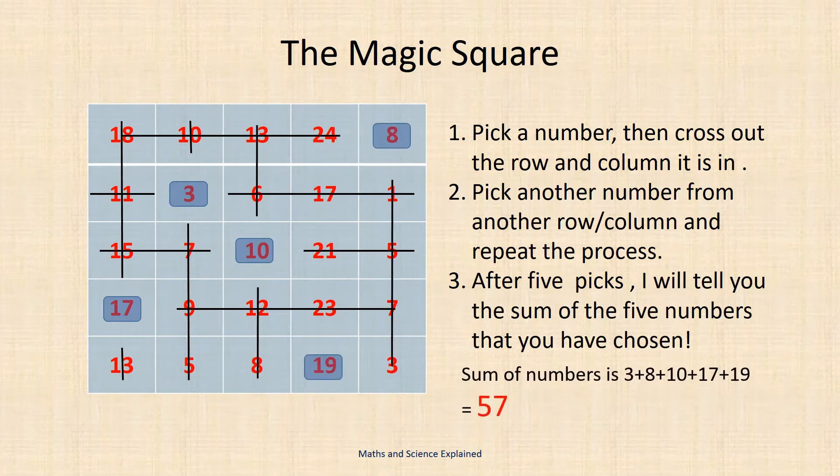Lastly to your astonishment I then tell you that the sum of your chosen numbers is 57. In fact this square will always force the number 57. The rows and columns can be interchanged and it will still possess the property to force the number 57.